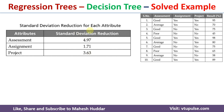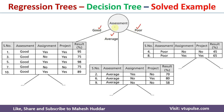We have now calculated the standard deviation reduction for each attribute. The attribute with the maximum standard deviation reduction is selected as the root node. Assessment has the maximum SDR of 4.97, so it becomes the root node. Since assessment has three possibilities — good, average, and poor — we create three branches. Assessment = good has 5 examples, average has 3, and poor has 2. We then apply the same regression tree process recursively until we reach the leaf nodes.